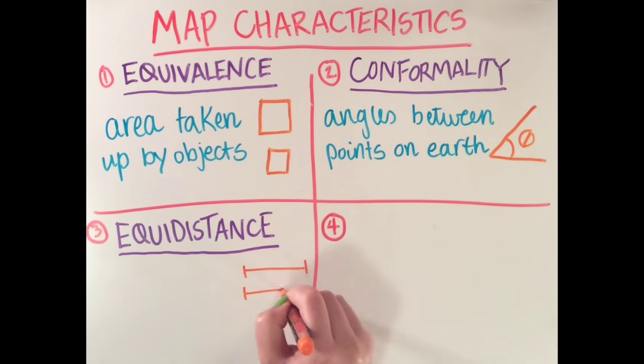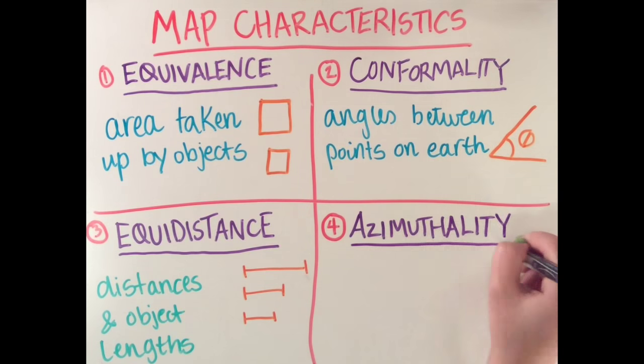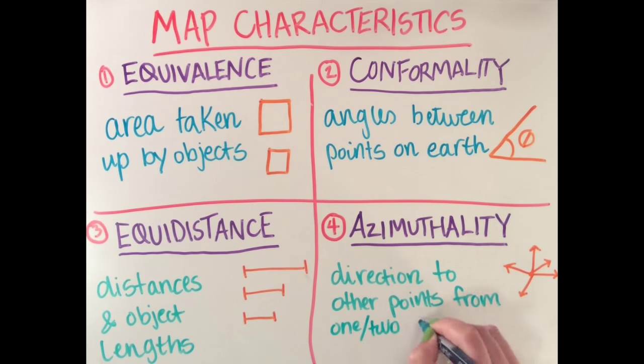The third is equidistance. Maps that preserve this keep all distances and lengths in the maps to scale. The fourth is azimuthality. Preserve this and the directions to and from one or two key points to other places in the map are kept accurate.